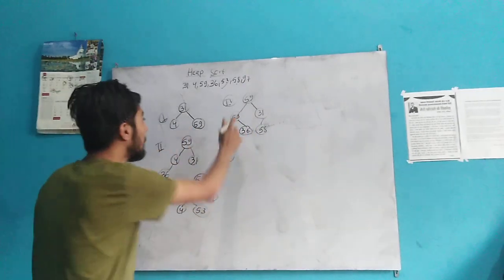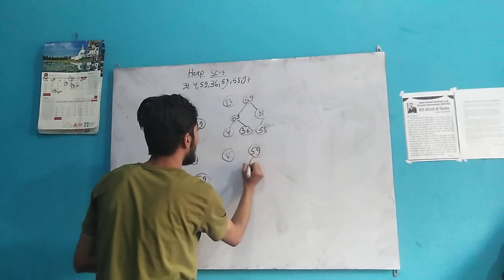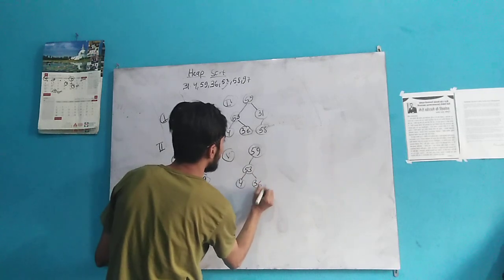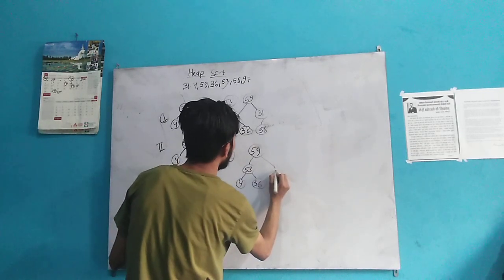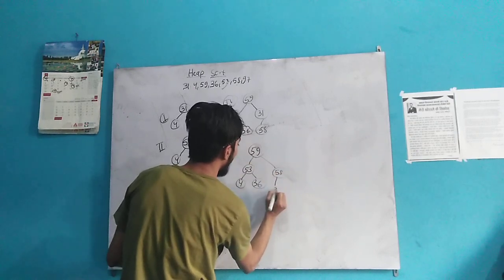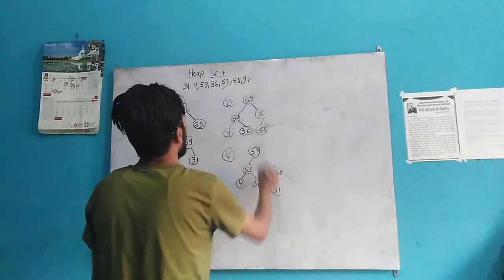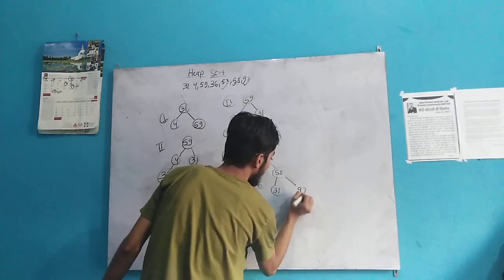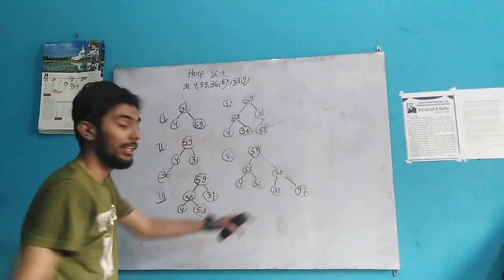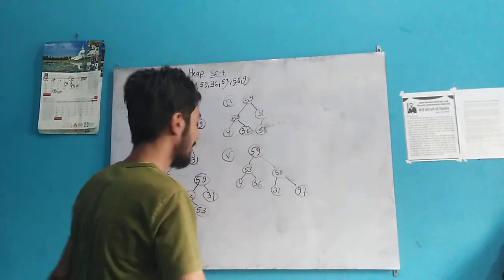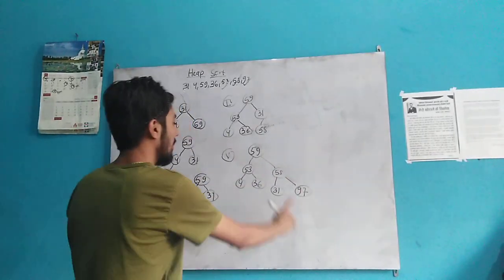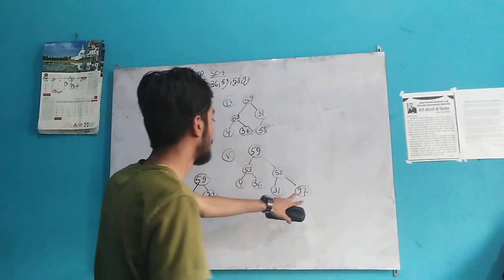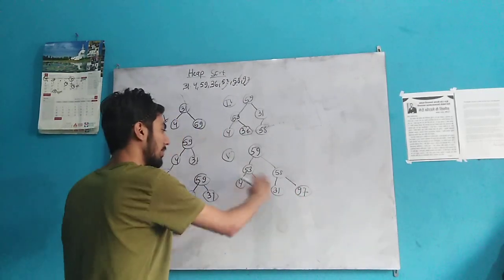Our next step becomes: 59, here 53, 4, 36, here 58, and here 31. Now it's turn for 97. We place 97 here. Again, 97 is greater than 58. In our max heap, the parent element must be greater than the child element, so we again swap it.